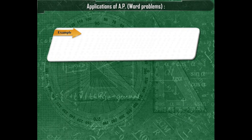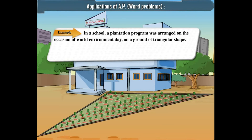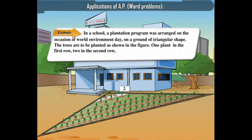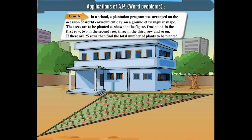Let us solve one more question. In a school, a plantation program was arranged on the occasion of World Environment Day on a ground of triangular shape. The trees are to be planted as shown in the figure — one plant in the first row, two in the second row, three in the third row, and so on. If there are 25 rows, find the total number of plants to be planted. Since the common difference is 1, it is an AP with the first term 1.